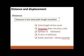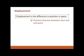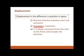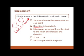Displacement is the difference in position in space — it is the shortest distance between the start and end point of a motion. Direction is very important here; it is always measured from the start to the finish and includes direction. If an object takes a curved path, the red line gives the distance travelled, but displacement is the straight line from start to finish. The SI unit is metres and it is a vector, so it has a positive or negative value.